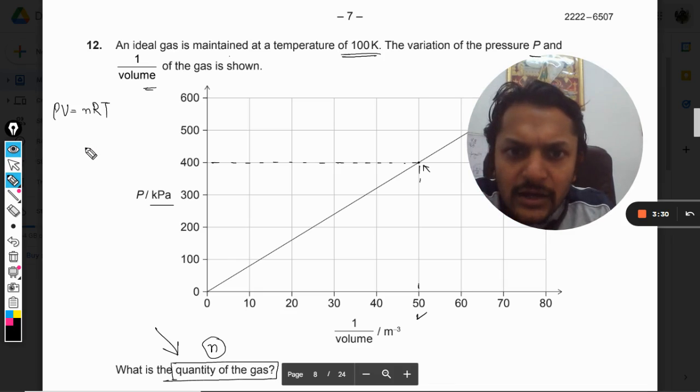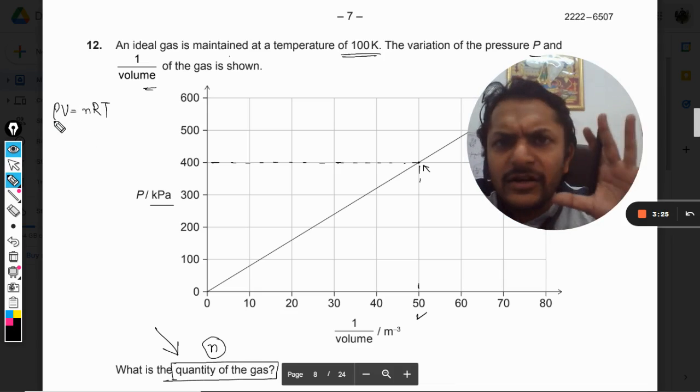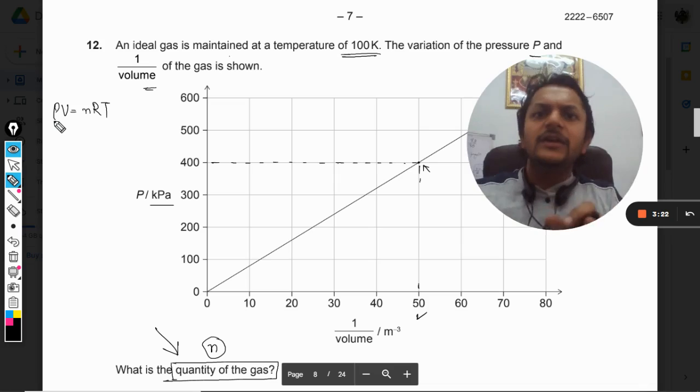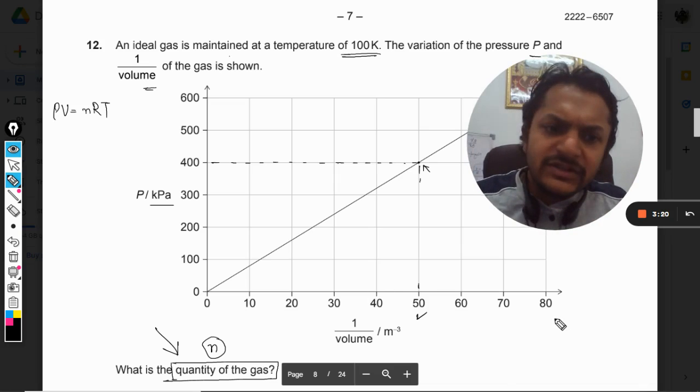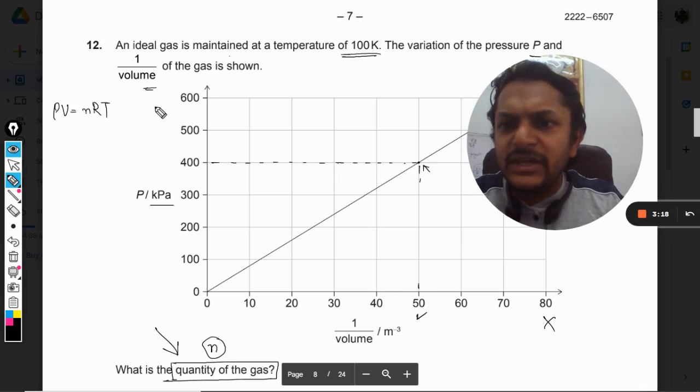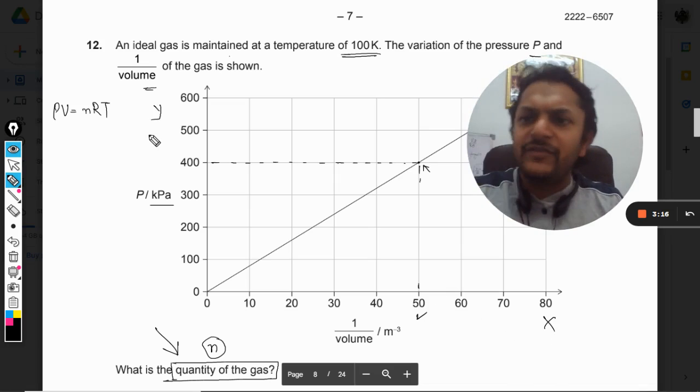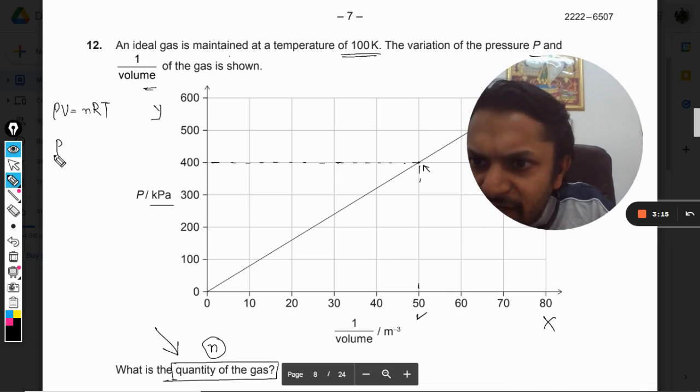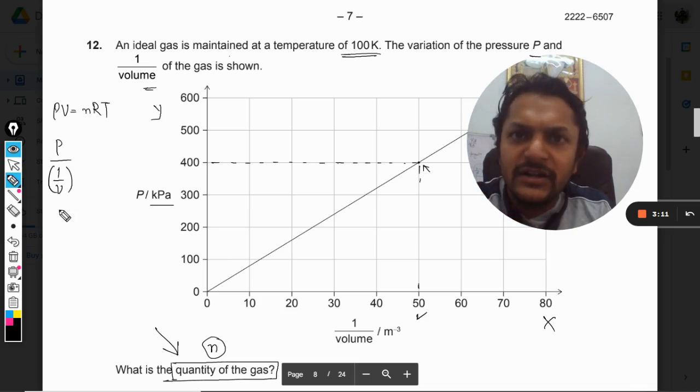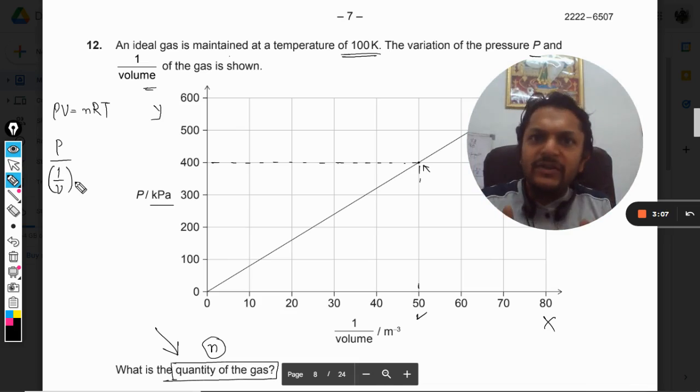We have to create 1/V in this equation. We will substitute 1/V as x and P as y, just for our clarification. So we can write it as P divided by 1/V, which equals PV, isn't it? So this is equal to nRT.